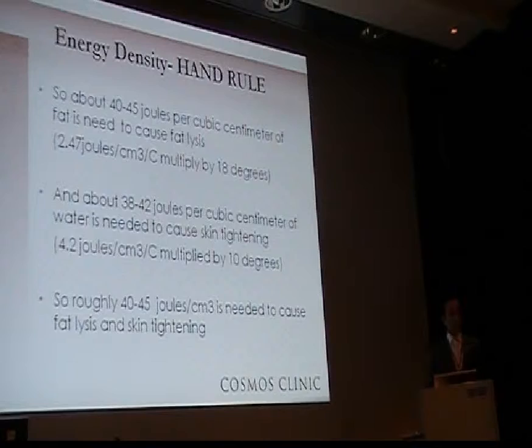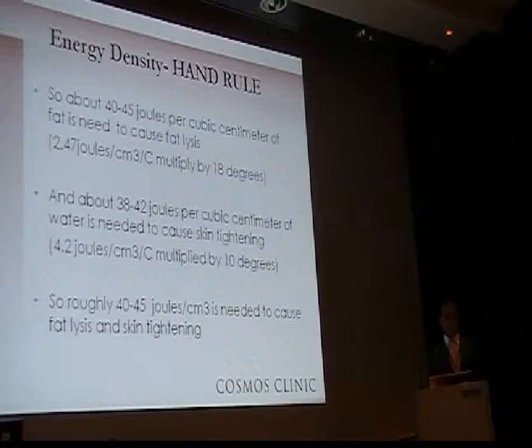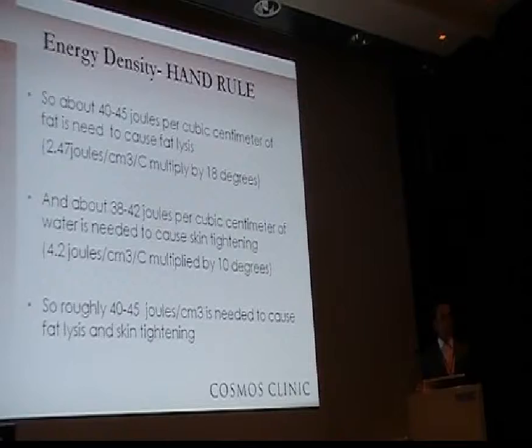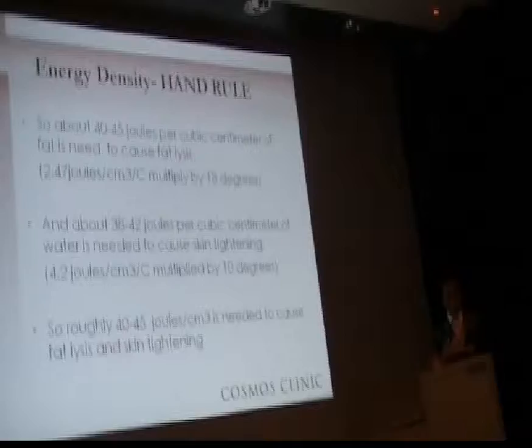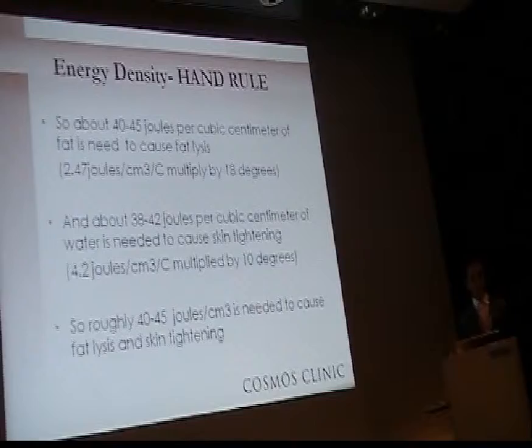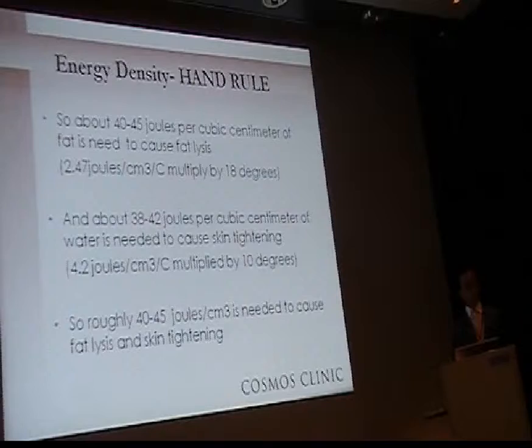So 40 to 45 joules per cubic centimetre of fat is needed to cause fat lysis. This number is achieved by multiplying the specific heat of fat by the temperature rise needed to cause fat lysis. A similar number of approximately 38 to 42 joules is achieved when you multiply the specific heat of water by the temperature rise needed to cause collagen remodelling. I therefore roughly deliver 40 to 45 joules per cubic centimetre to cause optimal fat lysis and skin tightening.